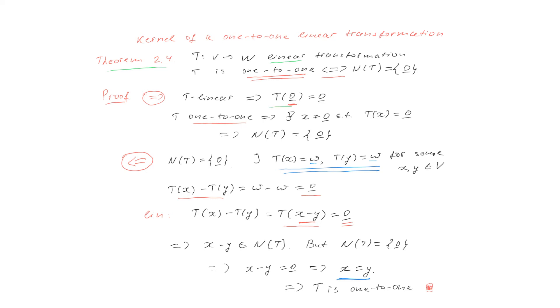When we are proving this direction, then from the fact that transformation is linear, we concluded that zero is transformed to zero. And when we are proving the opposite direction, then we use here the property that the transformation is linear. Then we could write this equality.